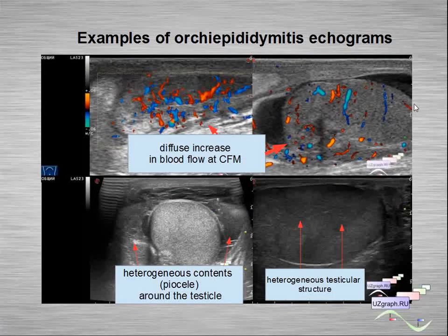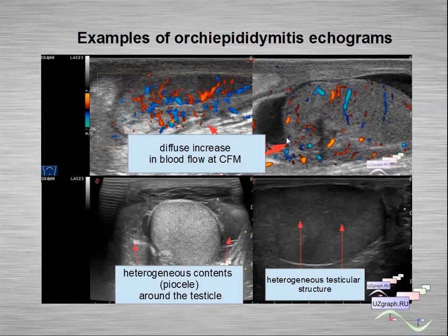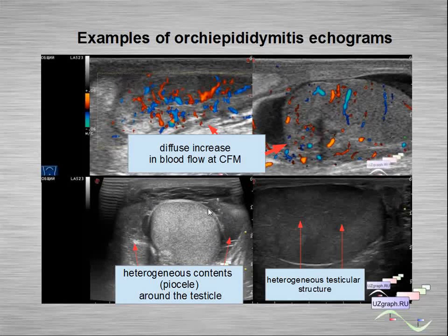Examples of orchido-epididymitis echograms: we can see an enlarged epididymis with increased blood flow in the epididymis and testicle. We can see heterogeneous content around the testicle — this is a pyocele. We can also see a heterogeneous testicular structure in orchido-epididymitis.